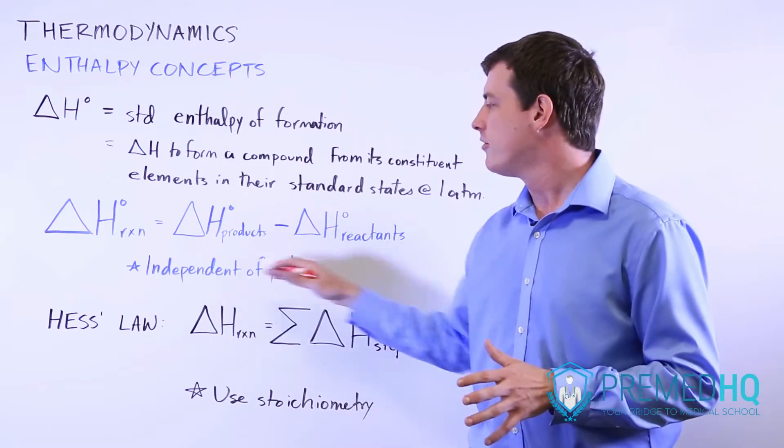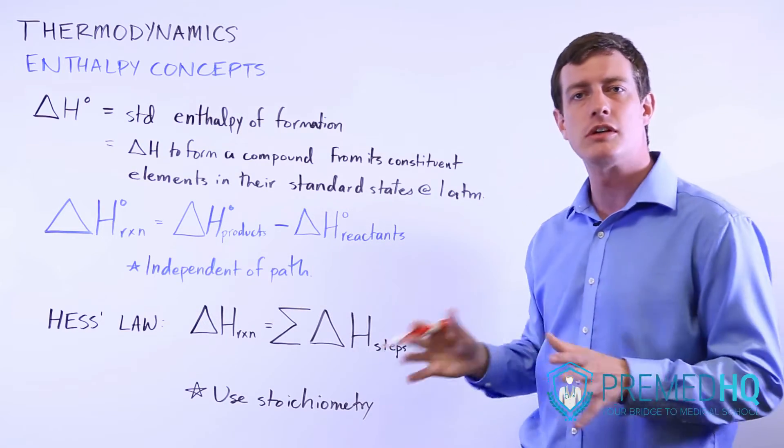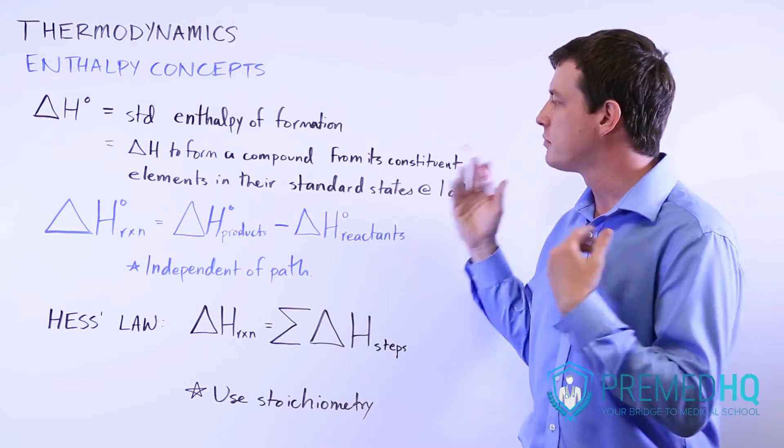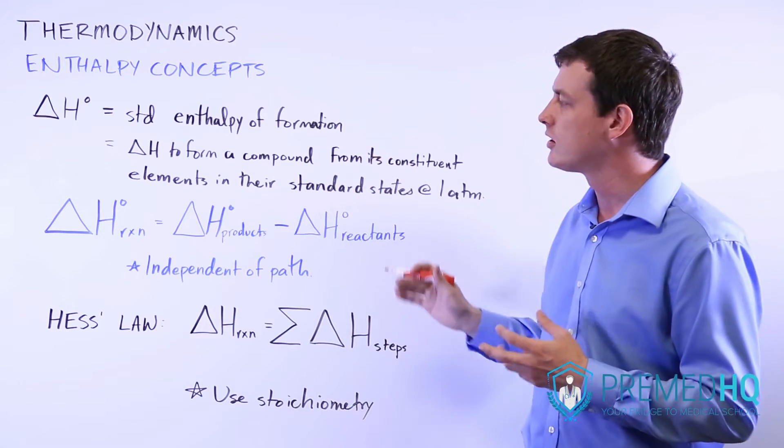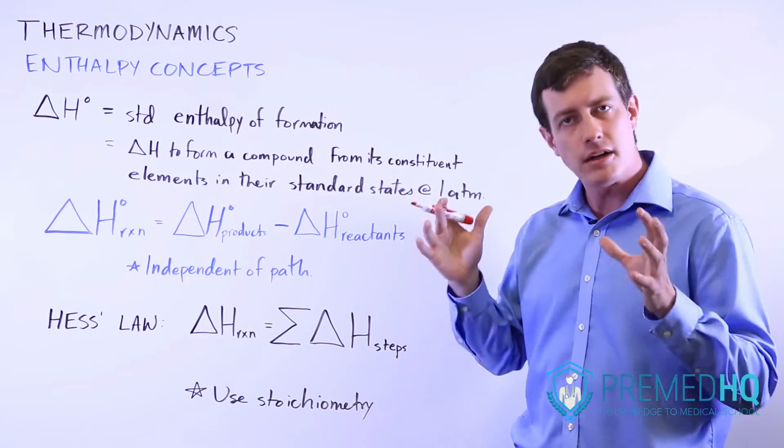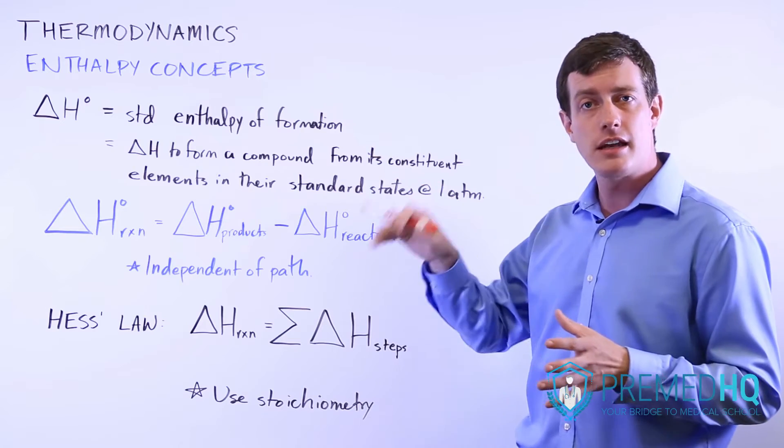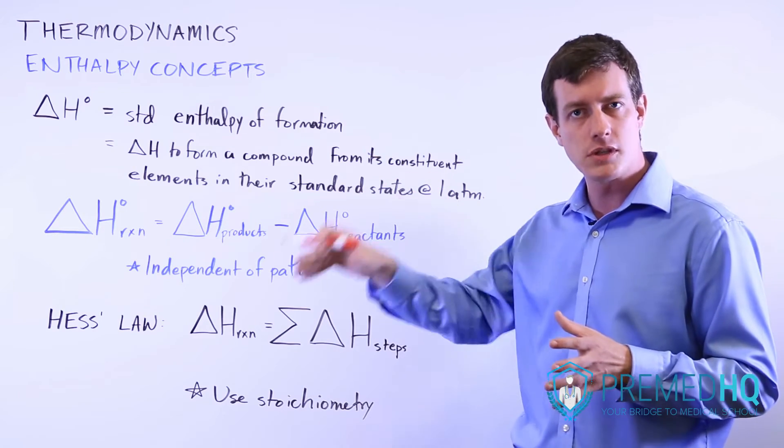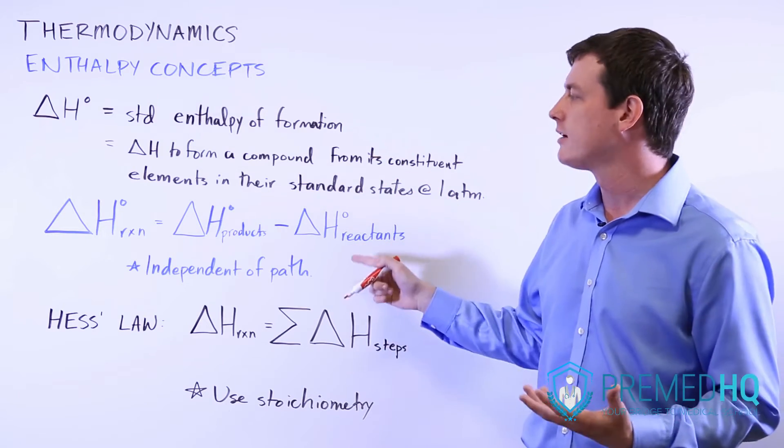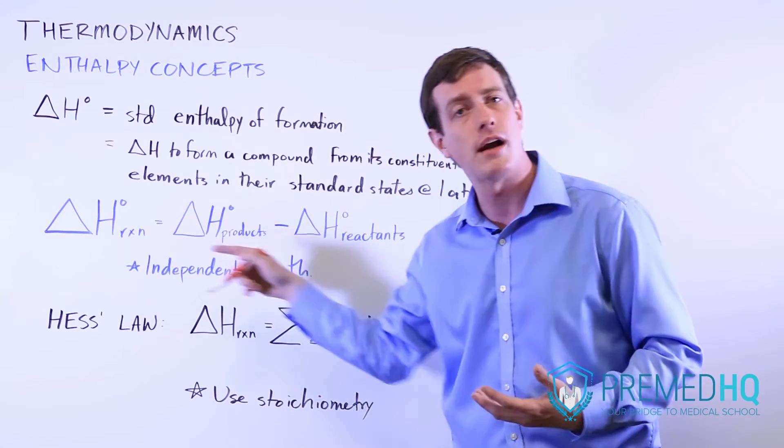This is independent of path. It doesn't matter how many steps are involved in that reaction process to get from one place to the other. You just look at the balanced reaction, look at the standard enthalpies of formation of those components, and then you can just calculate the delta H standard for that reaction.